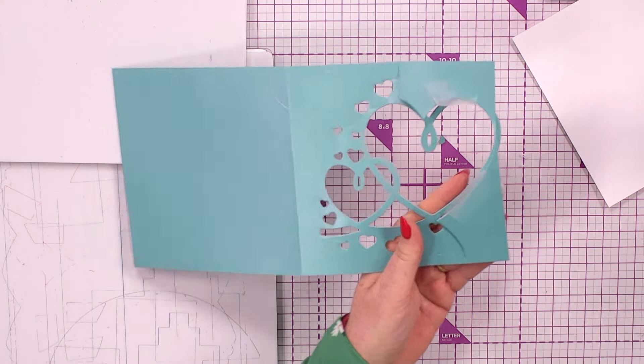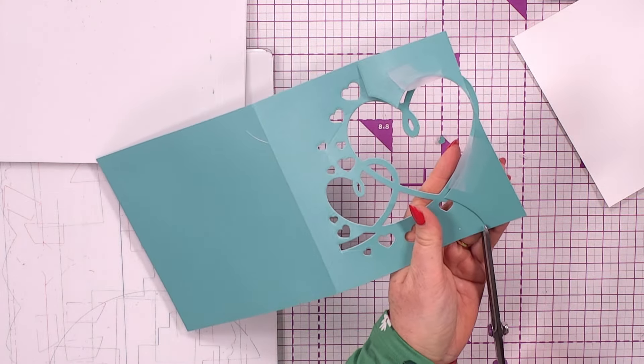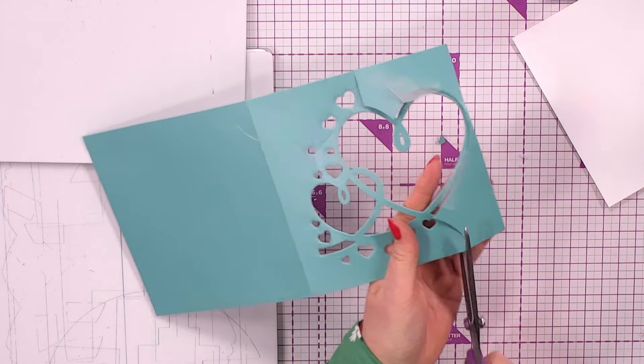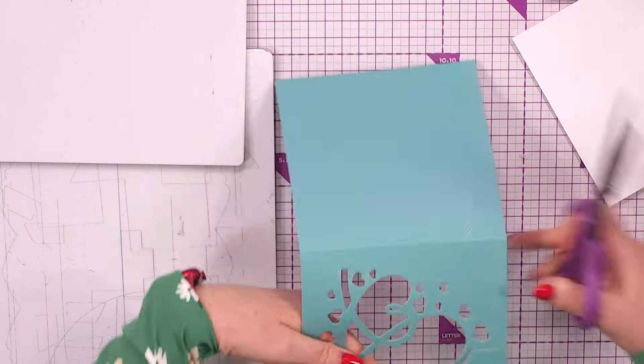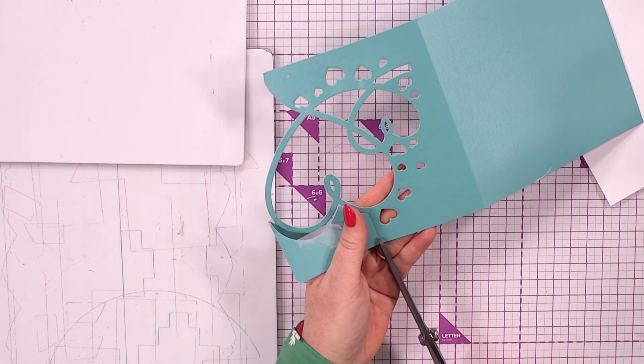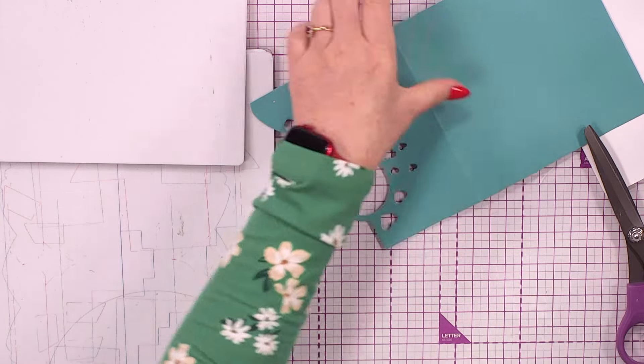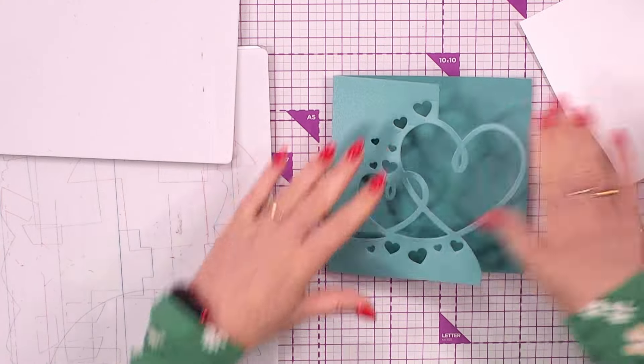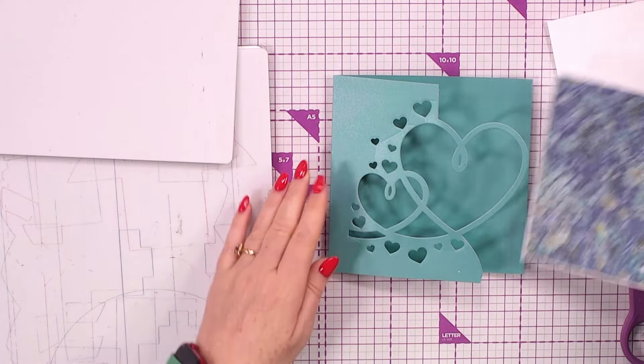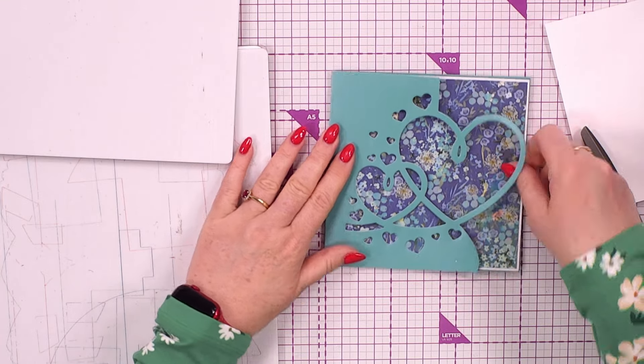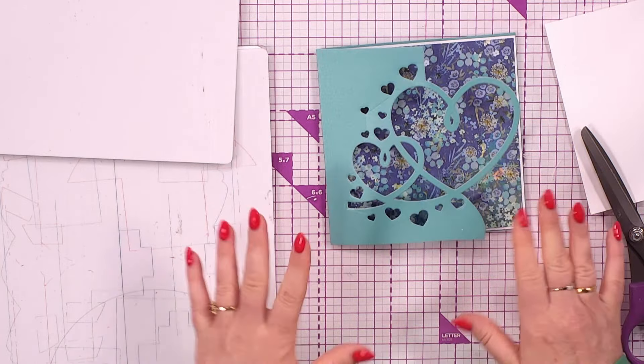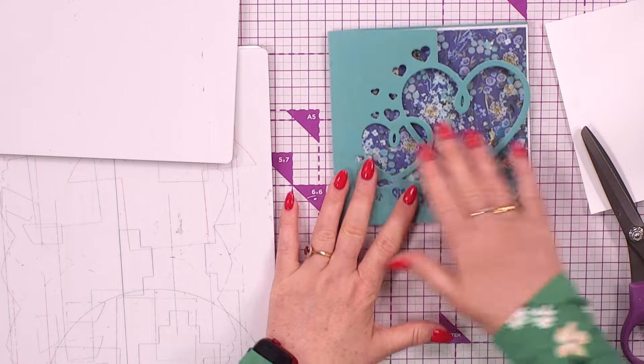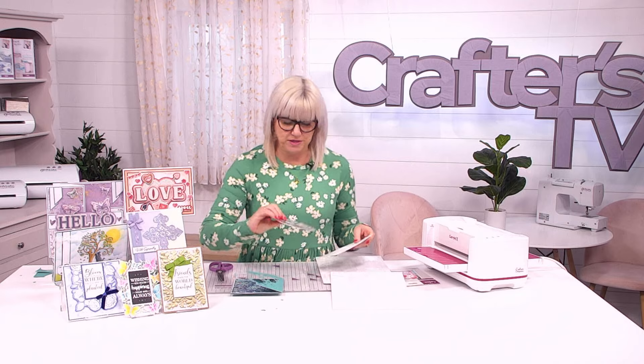I'm just going to snip that down. We're going to carry on rounding around just like so, and this one straight down just on the top there. That takes that whole section away which gives us that amazing card front.